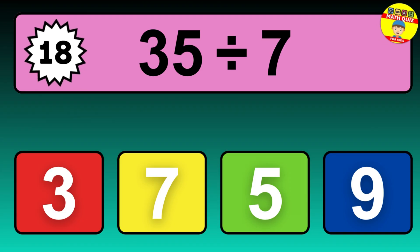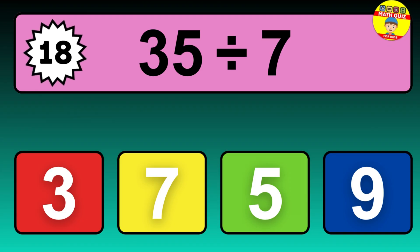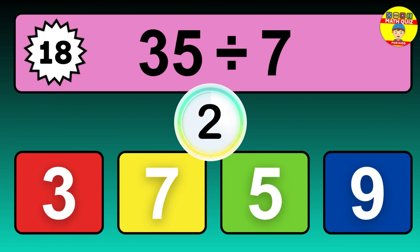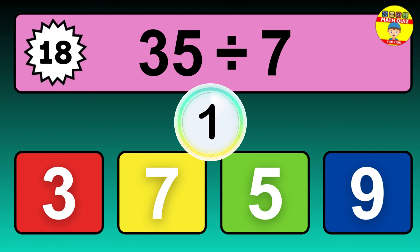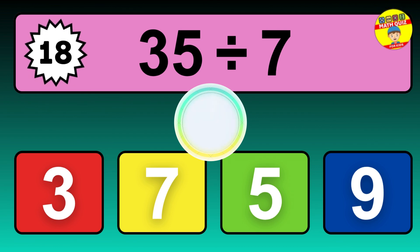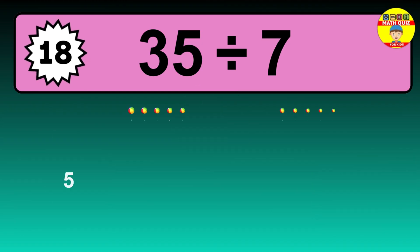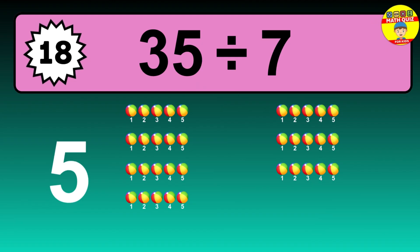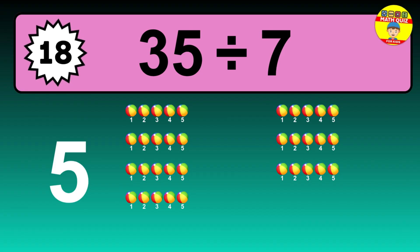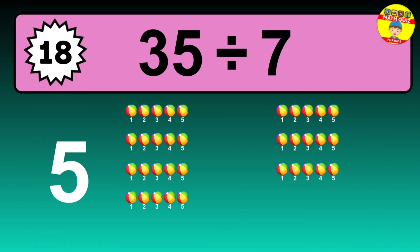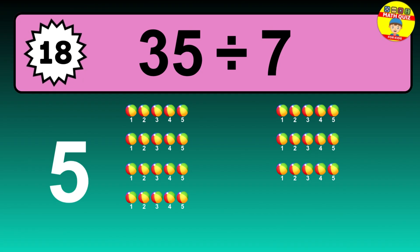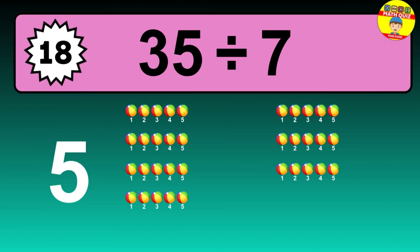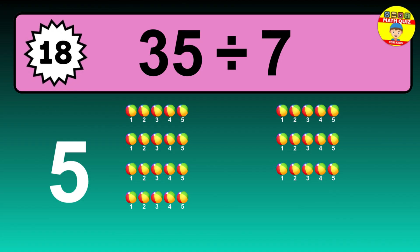35 divided by 7. It's time to think. Let's go to the solution. Divide the number 35 by 7. Each group contains 7 units, so dividing 35 by 7 results in 5 equal groups. Thus, the result is 35 divided by 7 equals 5.